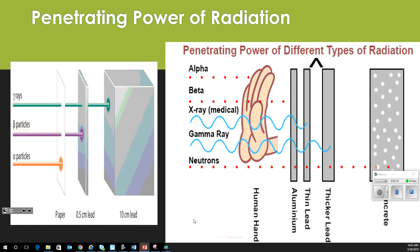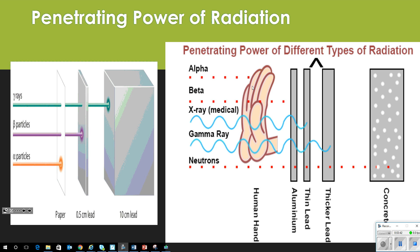We've talked about the penetrating power of radiation before, but we'll go through it again because you need to know it really well. Alpha particles are stopped by paper. Beta particles are stopped by about 0.5–0.7 centimeters of lead — that's about what the x-ray technicians put on you with that heavy apron. If you had 20 of those aprons, that would stop a gamma ray, or you could use five feet of concrete. Medical x-rays go through the skin but can be stopped with lead. Gamma rays go through thicker lead, and neutrons will even go through five feet of concrete to a certain point.